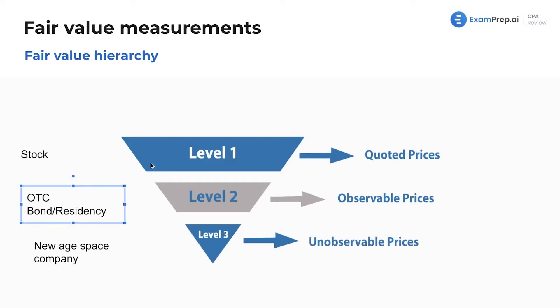As you go down the levels, it gets a little bit harder to value. Level one is a quoted price — you get a quote directly from a market. Level two is an observable price — these are prices you can observe, but they're not just given to you right away.